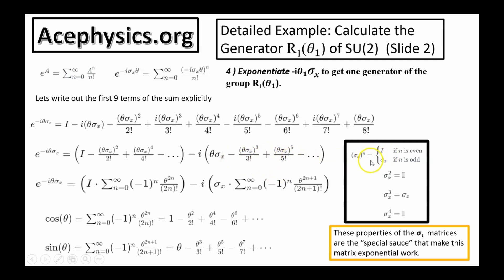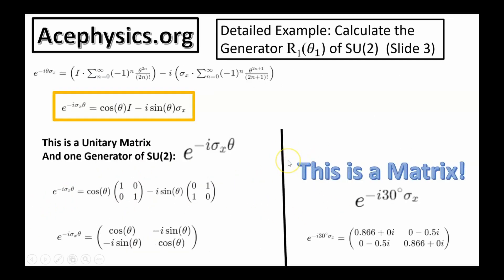Using the special property of sigma_x — that sigma_x to an even power equals the identity and to an odd power equals sigma_x — you can factor out the identity and sigma_x respectively. The sum of even terms gives cos(θ) and the sum of odd terms gives sin(θ). Therefore, e^(−i·sigma_x·theta) equals cos(θ) times the identity matrix minus i·sin(θ) times sigma_x, and this is one of the three generators of the group SU2.